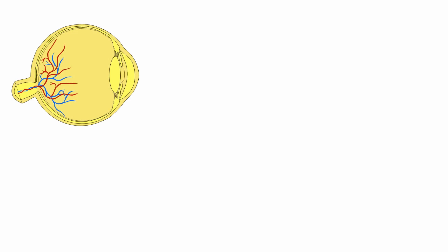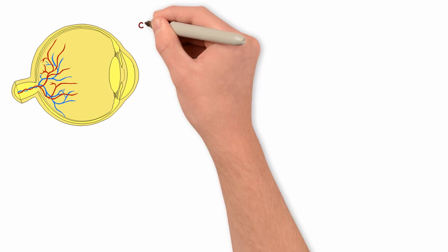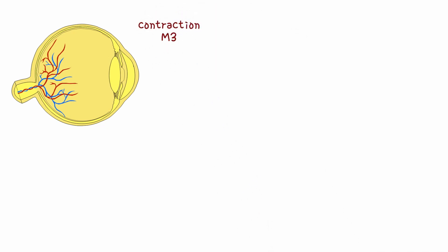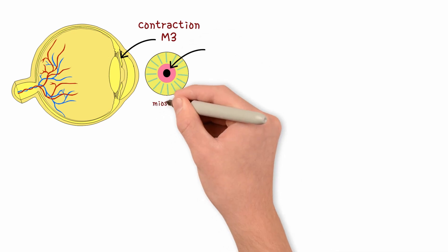Eye. Jack wants to focus on near vision. Think of the receptor. It's M3. M3 activation contracts the iris sphincter and ciliary muscle. This causes miosis or pupil constriction.